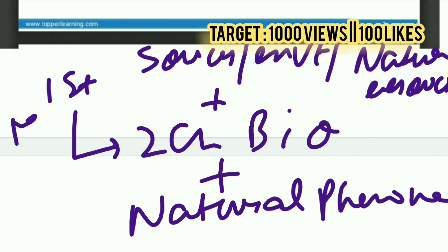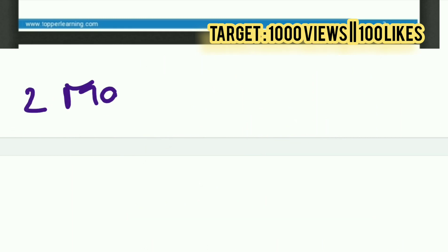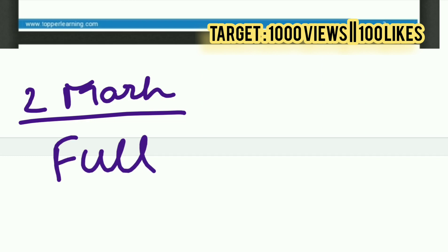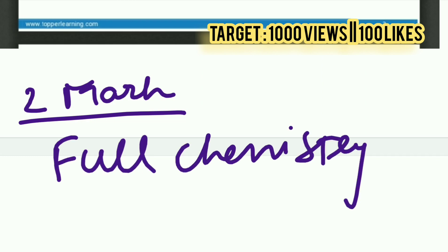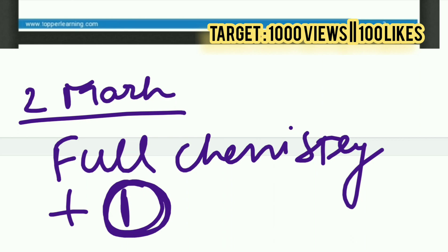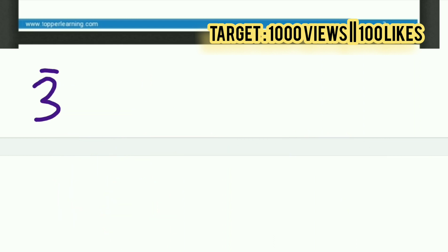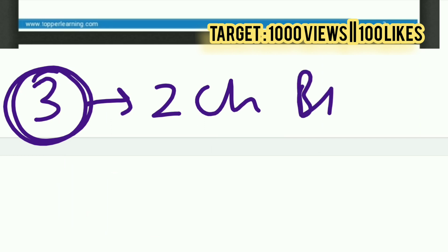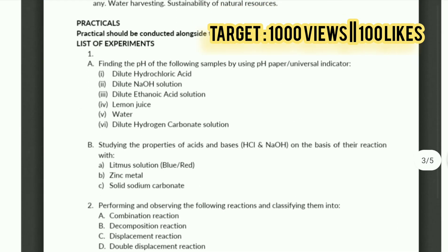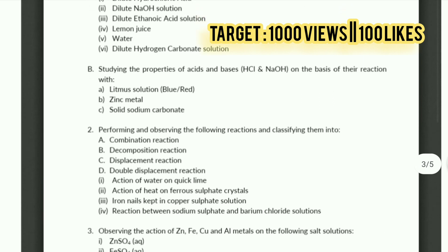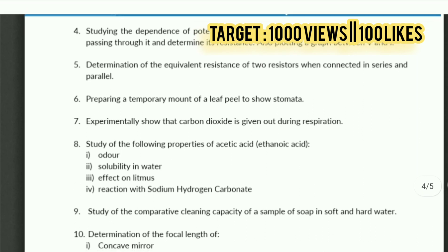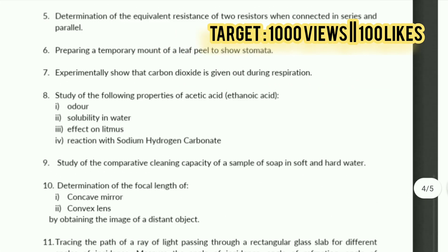Day 2 is when you start chemistry — the whole chemistry portion for the first time. After that you also cover Sources of Energy, Our Environment, and Management of Natural Resources. If something is left from those, you complete them at this time. Day 3: you start the two chapters of biology. And all of you must not forget the experiments — do not skip the experiments, because MCQ questions are coming from them.